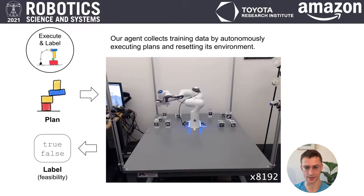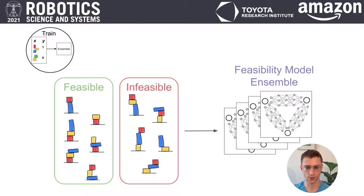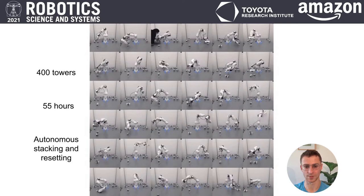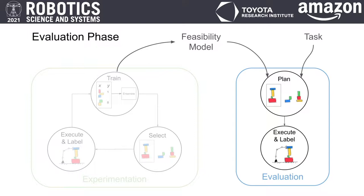Having chosen the plans which are expected to be most informative, we execute those plans on the robot. An external plan success monitor supplies a label. The labeled plan executions are added to the data pool, and we retrain the ensemble of feasibility models. The robot repeats each component of the active learning loop, autonomously assembling towers and resetting the environment between experiments. In total, the robot performed 400 experiments to learn the feasibility model over the course of 55 hours.